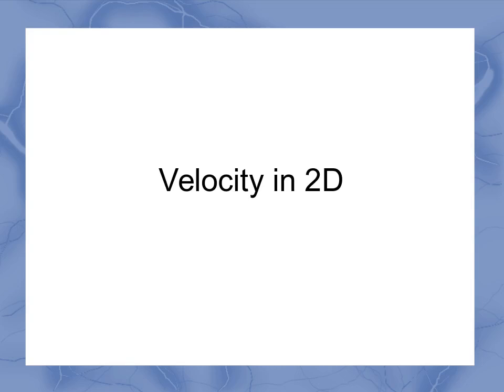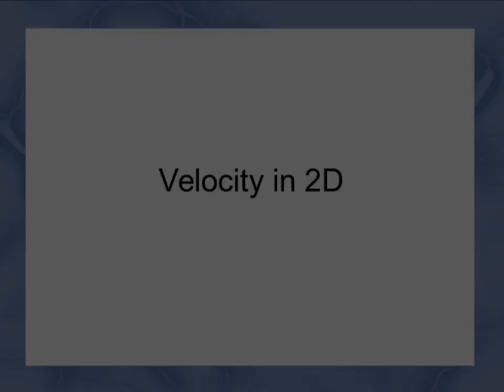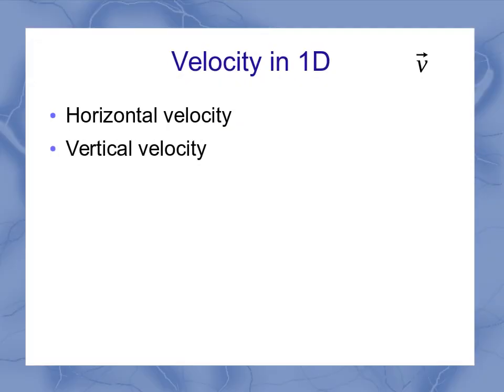Now we can look at velocity in two dimensions. Again, when we had velocity in one dimension, it was the symbol vector v, and it could be a horizontal velocity or a vertical velocity.